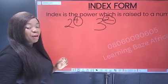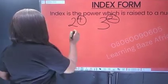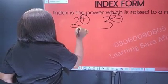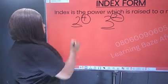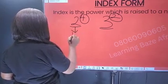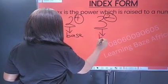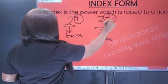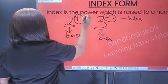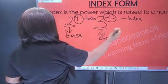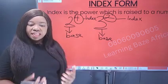When you've been given index form, the bottom numbers are called the base. So this is the base, and the power is called the index. When numbers are written like this, we say they have been written in index form.